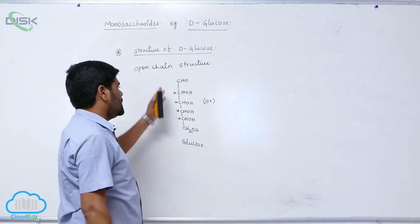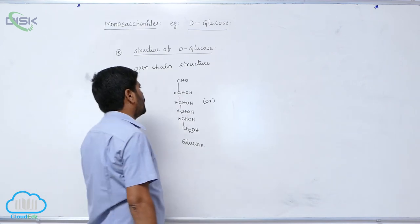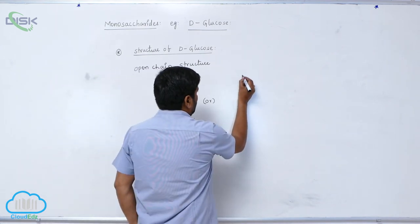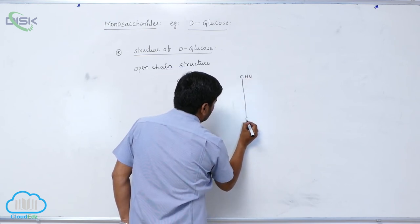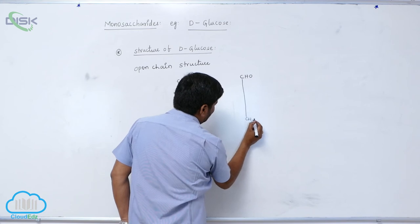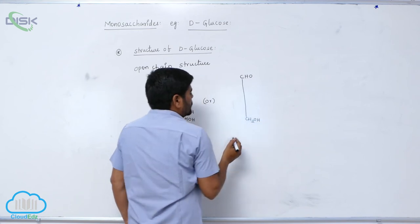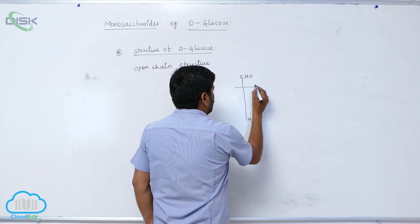This is the open chain structure of glucose with the related positions of hydroxyl groups. For the second